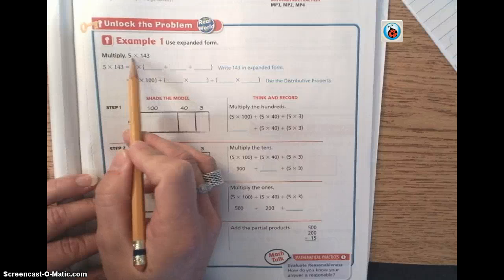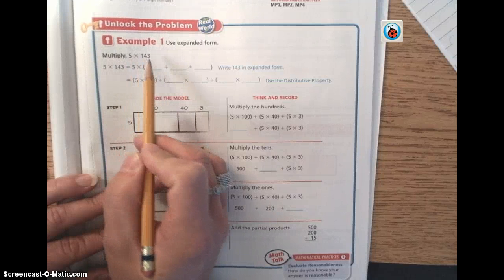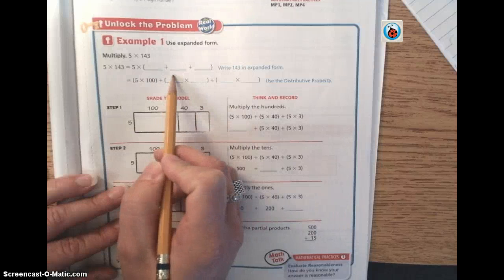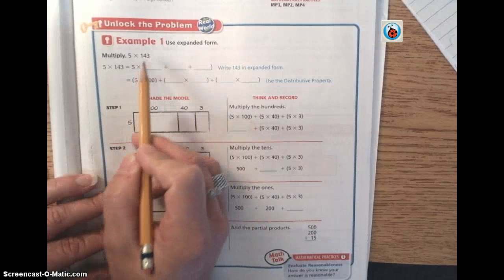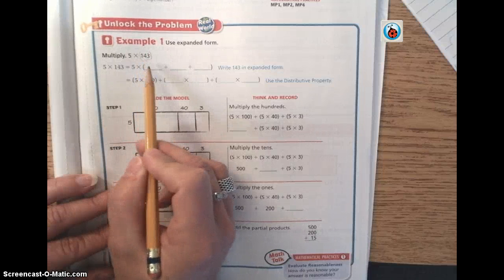We're going to first multiply 5 times 143. And essentially with expanded form, it's just like the beginning of the year when we looked at the different ways you can write a number, we're going to break apart the larger factor.